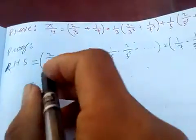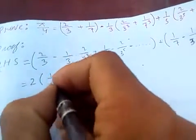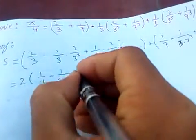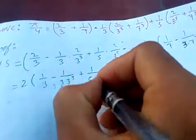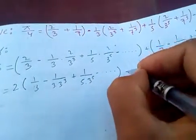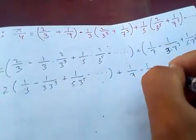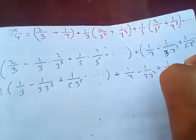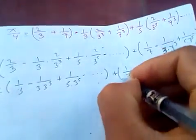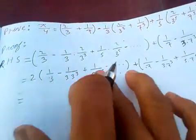So there's 2 common, so 2 times: one over three minus (1/3)·(1/3) keep plus (1/5) into 3 to the power five minus and so on, plus (1/7) minus (1/3) into 7 keep plus (1/5) into 7 to the power five minus and so on.